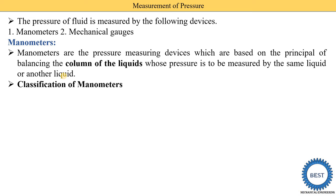The classification of manometers consists of two types: the first is the simple manometer and the second is the differential manometer. A simple manometer is used to measure the pressure of a fluid at any single point.